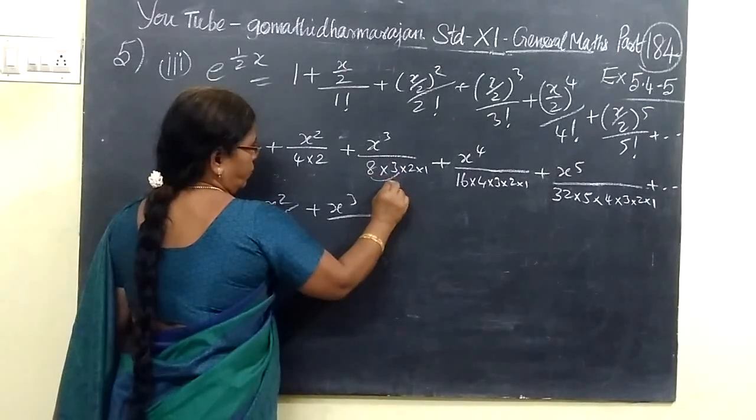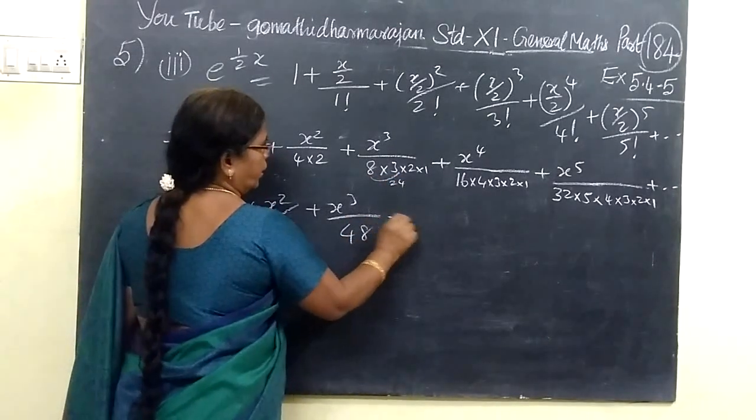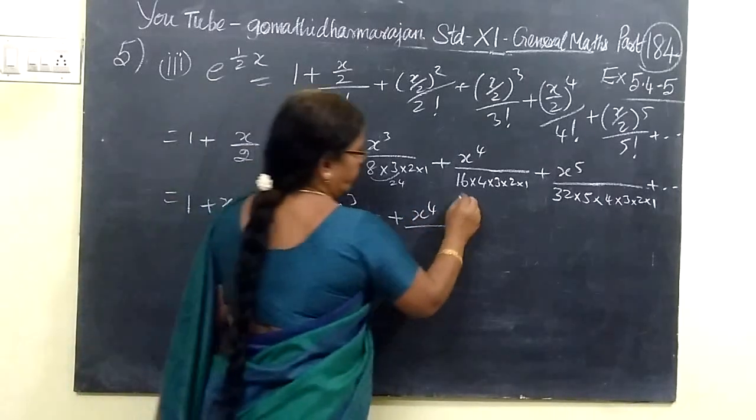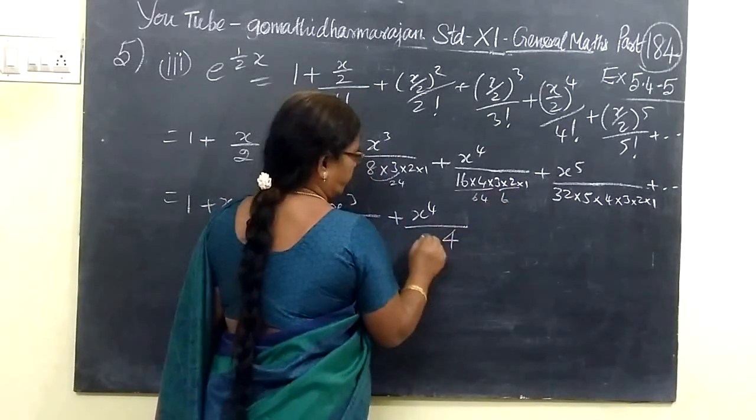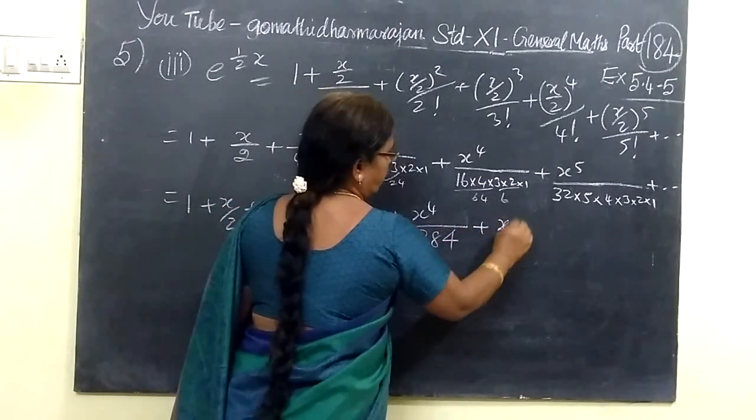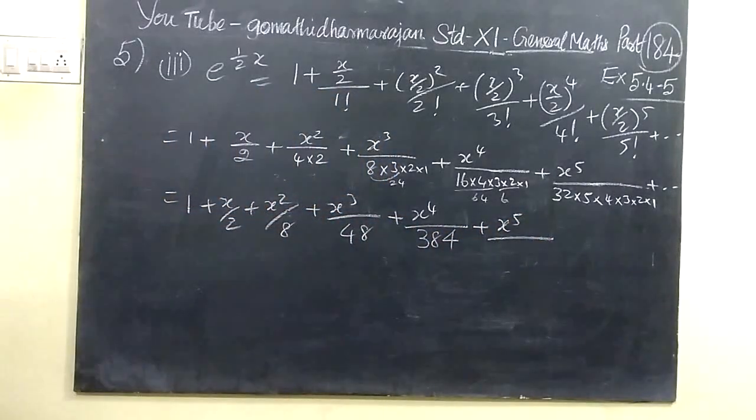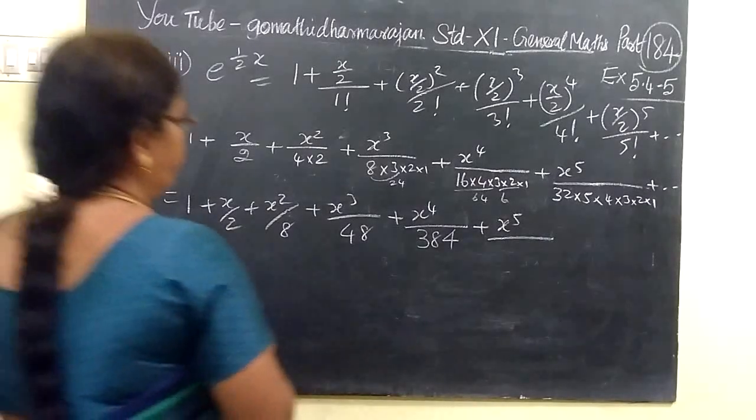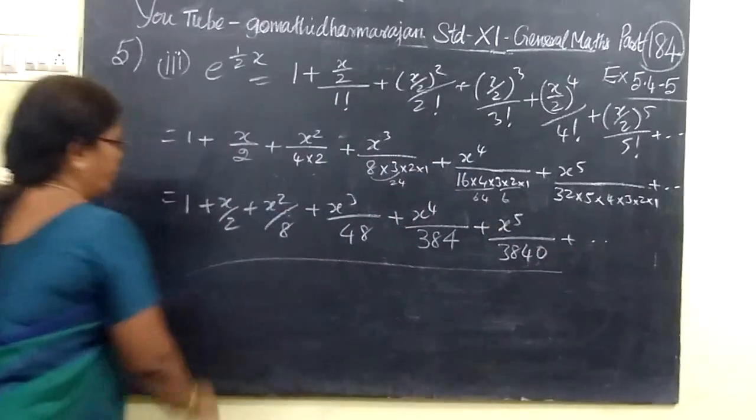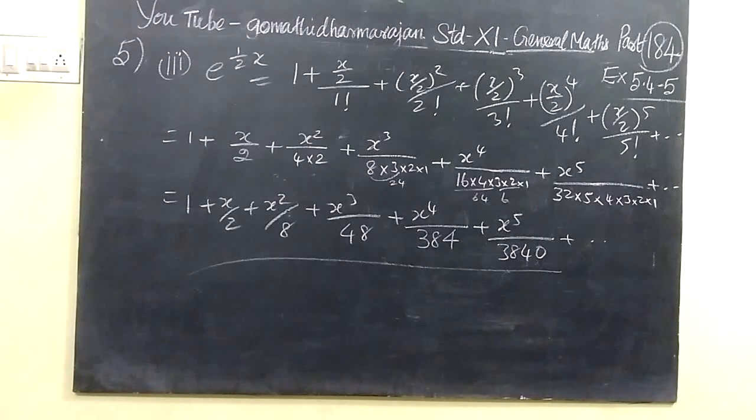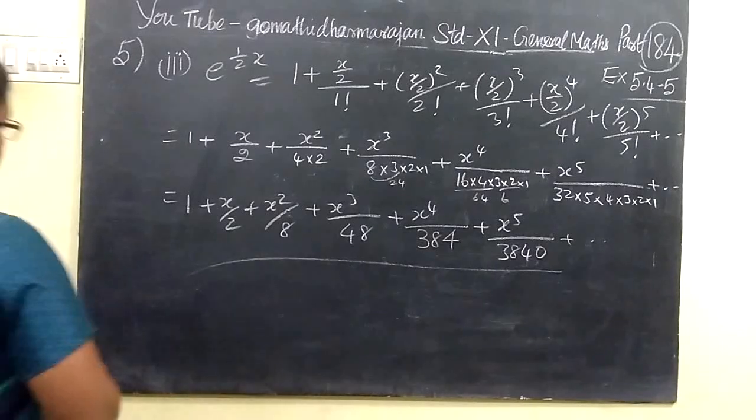But we need only six terms. So, 1 plus x by 2, then x squared by 8, then x cubed by 48, then x to the fourth by 384. Then we get x to the fifth by 3840. So, the exponential series from an easy answer.